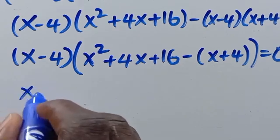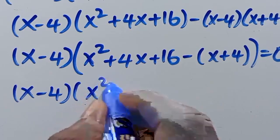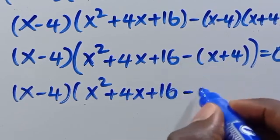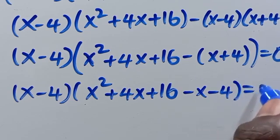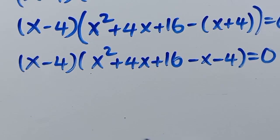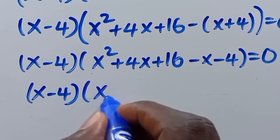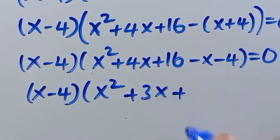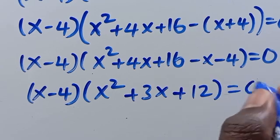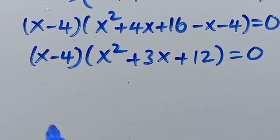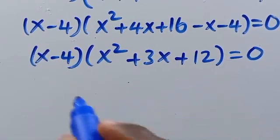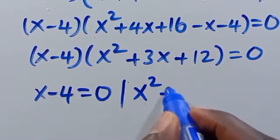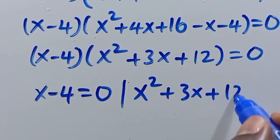So from here, (x minus 4) is common. We factor it out: (x minus 4) times [(x squared plus 4x plus 16) minus (x plus 4)], which gives us (x minus 4)(x squared plus 3x plus 12) equals 0.